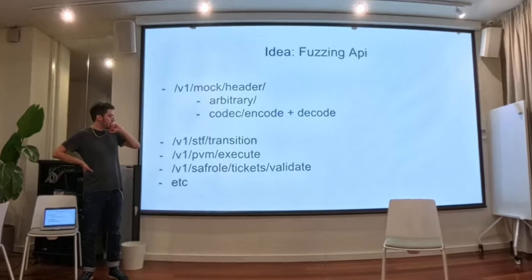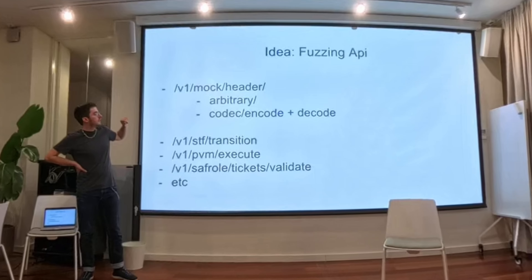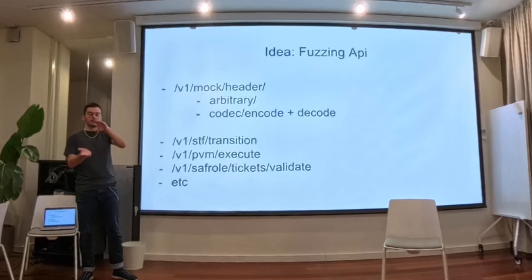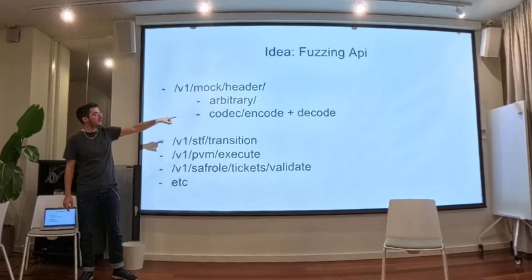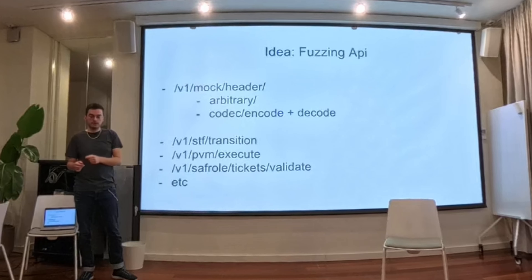One more thing: I actually wanted to have this ready but didn't really get along with the API. What I wanted to do is have an endpoint on JamChain where you can use it for integration testing with other teams without exposing a binary. So you could, for example, generate a random arbitrary header and it would return you a JSON of a valid header. And you could then call the same endpoint at slash codec encode with this JSON, and it would canonically encode it and return the SCALE codec bytes. You could then run this locally on your node and see if you're getting the same value or a different value.